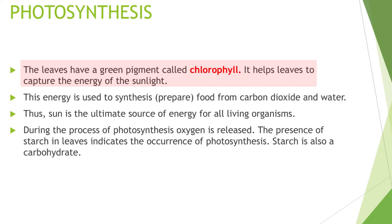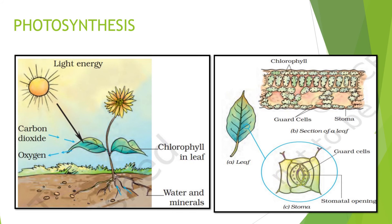The energy captured is used to synthesize food from carbon dioxide and water — this process is called Photosynthesis. Plants take carbon dioxide from the lower side of the leaves, and they take water from the roots. So the plants take carbon dioxide and release oxygen.